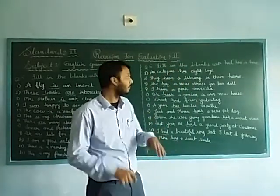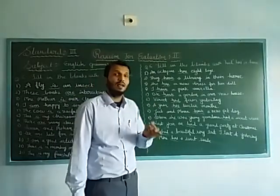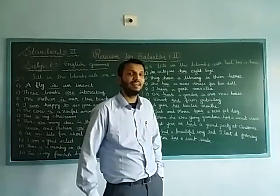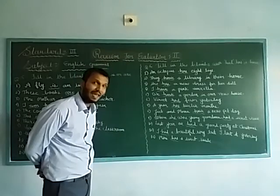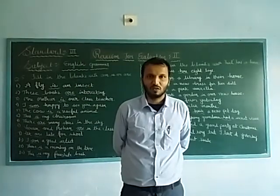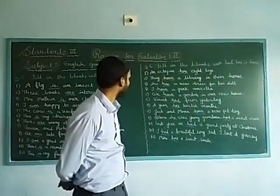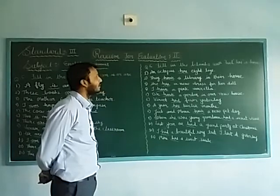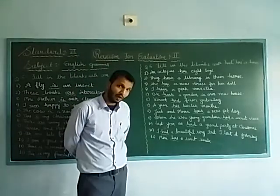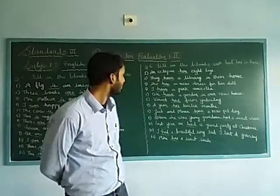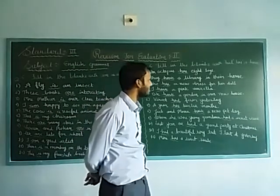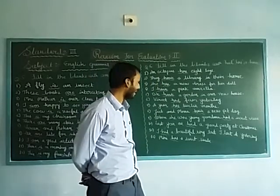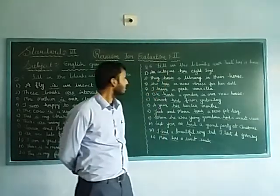Now question number six: fill the blanks with 'have', 'has', or 'had'. First number: an octopus blank eight legs — the answer is 'has', an octopus has eight legs. Second number: they blank a library in their house — the answer is 'have', they have a library in their house. Third number: she blank nutrients for her blood — the answer is 'has', she has nutrients for her blood.